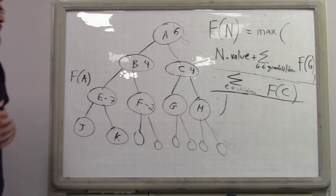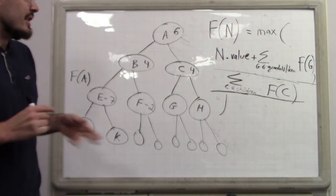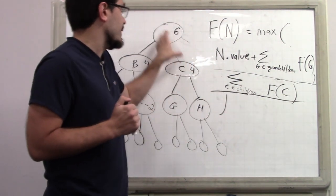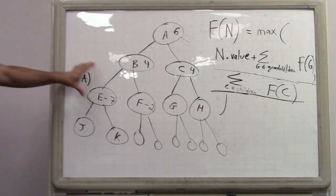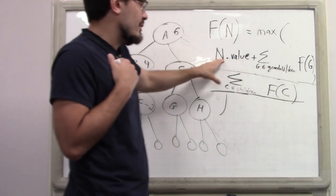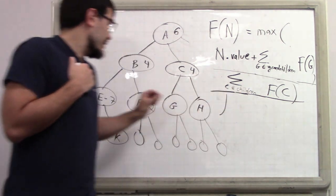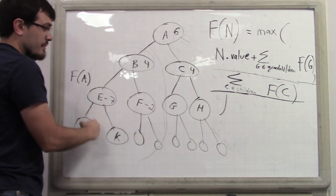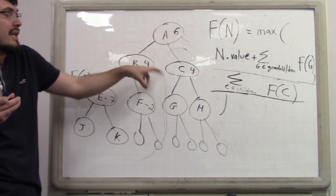The overall solution is f(A), the solution to the subtree rooted at A, since that's the top of the tree. So basically: either you take the value of node N and sum over all grandchildren — because their subtrees can be solved independently — or you sum over all children, skipping this node, and take the best solution for each child's subtree independently, because since you didn't take A, there's no immediate connection between those subtrees.